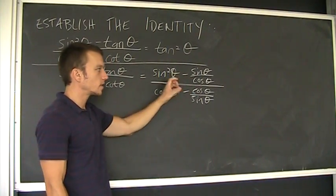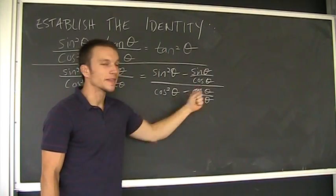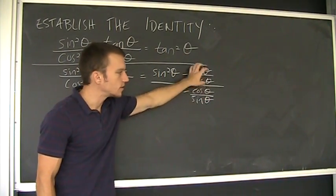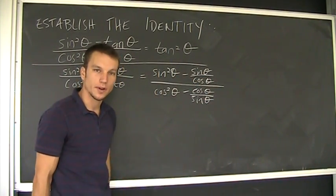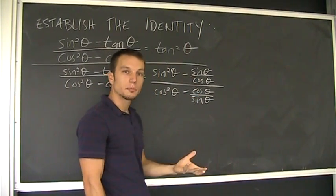So what I'm going to try is to multiply everything, this numerator and this denominator, by the least common denominator of these two fractions. That should clear my problem of a complex fraction. So the least common denominator between the sine and the cosine is the product of the two.